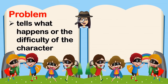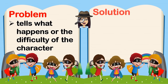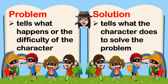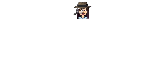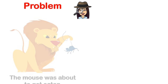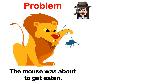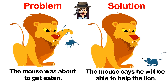Problem tells what happens or the difficulty of the character. Solution tells what the character does to solve the problem. This is the first problem and solution in the story. Problem: The mouse was about to get eaten. Solution: The mouse says he will be able to help the lion.